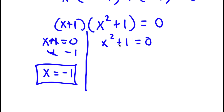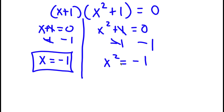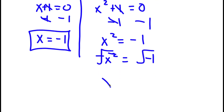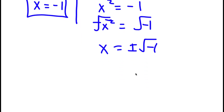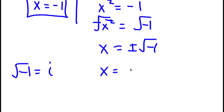For x² + 1 = 0, I'm going to first subtract 1 on both sides. These two ones cancel out, and now I have x² = -1. Now I'm going to take the square root on both sides: the square root of x² equals the square root of -1. The square root of x² is simply x, so x equals plus or minus the square root of -1. If you didn't already know, the square root of -1 is equal to i, the imaginary number. So I get x = ±i.